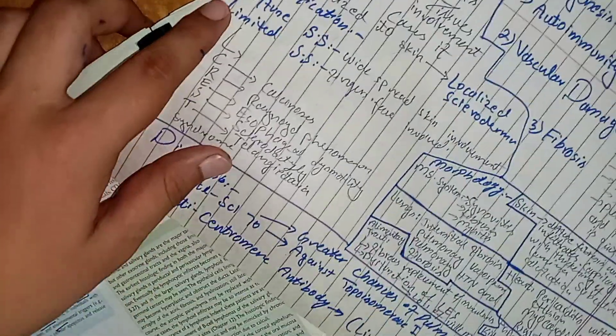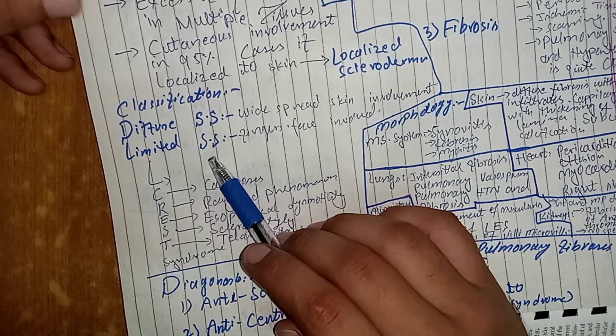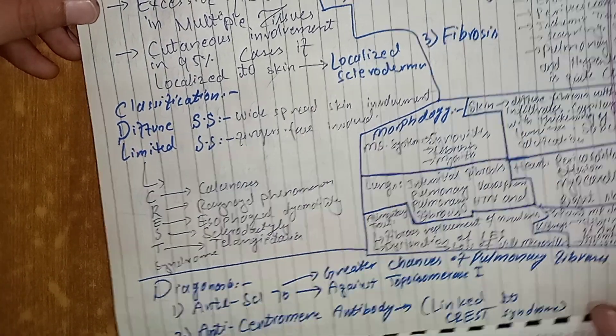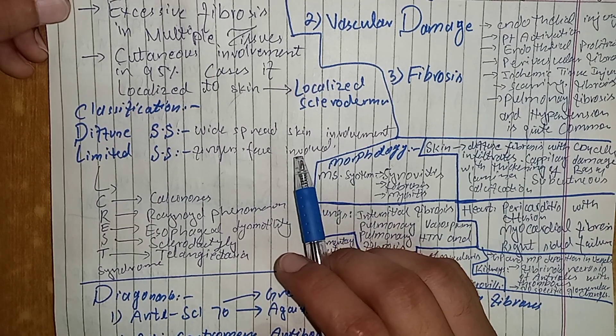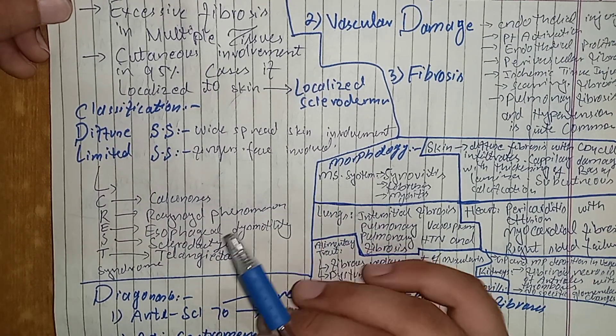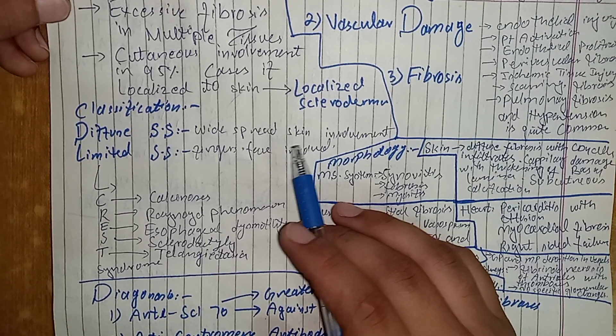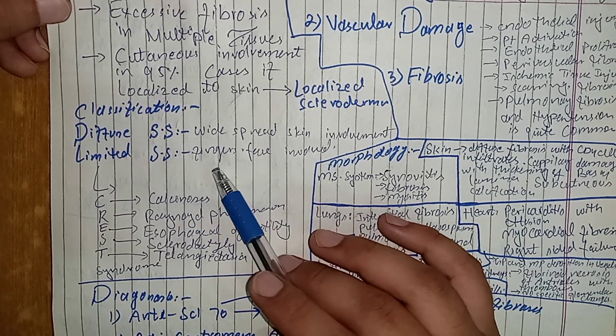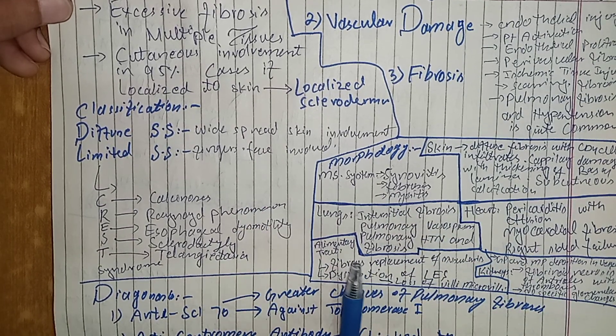So it can be classified into diffuse systemic sclerosis and limited systemic sclerosis. In diffuse systemic sclerosis, there is widespread skin involvement and skin of multiple body parts is involved in this condition in which there is excessive deposition of collagen in skin. However, in limited systemic sclerosis, fingers and face are basically involved in early disease course.